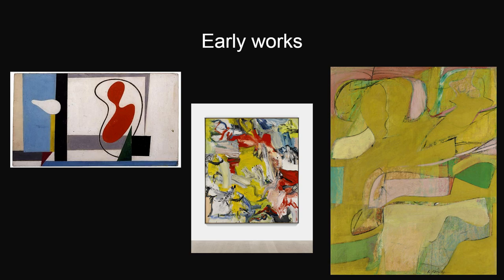De Kooning's early works of the 1930s and 1940s are abstract still life paintings characterized by geometric and biomorphic shapes with strong colors. The painting on the left really shows the style of his work, made up entirely of lines and bright, contrasting colors. The painting in the middle keeps the pattern with bright, contrasting colors but steers away from the conformed shapes.